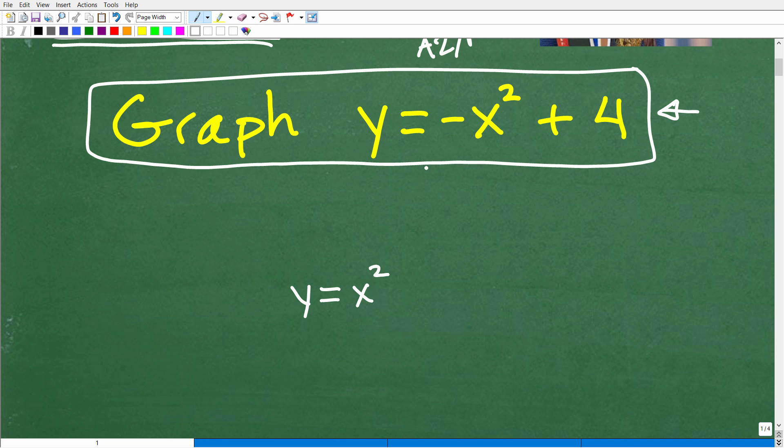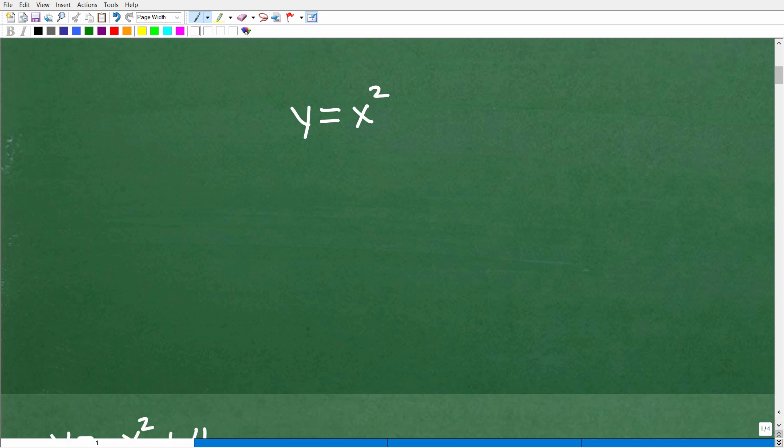If I want to graph y equals negative x squared plus 4, I need to understand what's the base function here. What is the base shape? I have this negative in front of x squared plus 4, but I'm most interested in, can you even graph y equals x squared? Hopefully you're saying, isn't that a parabola? If you said that was a parabola, that's correct. This is the base graph or equation for a parabola, a happy parabola.